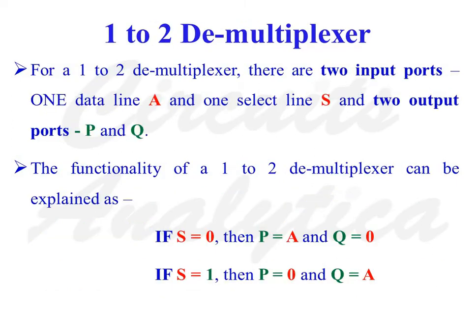Now let us confine our discussion to a 1 to 2 demultiplexer. For a 1 to 2 demultiplexer, there are two input ports: one data line A and one select line S, and two output ports P and Q.